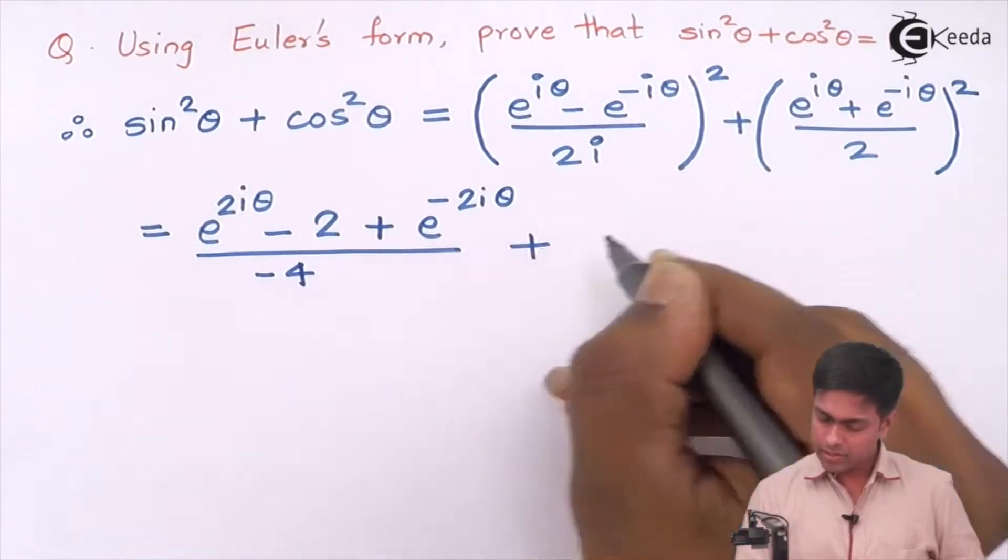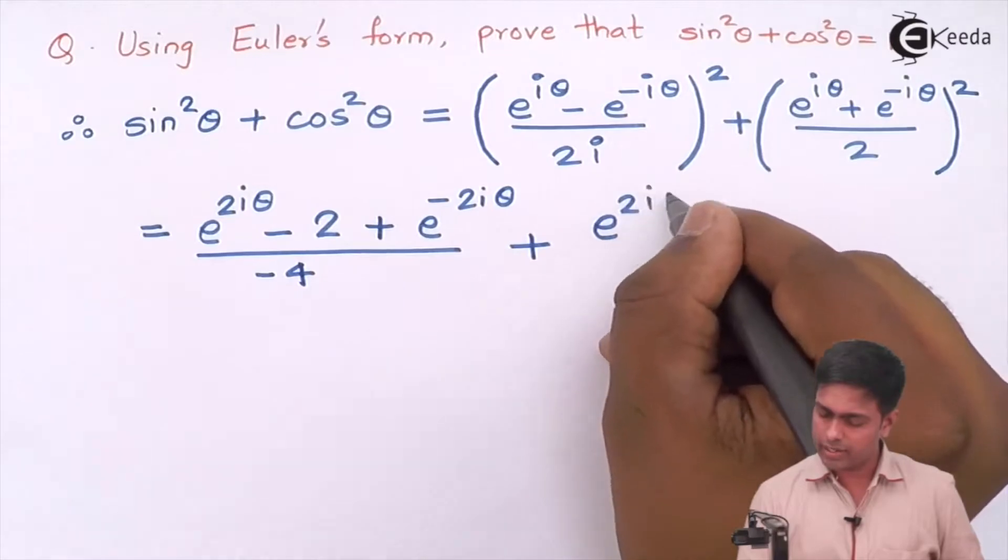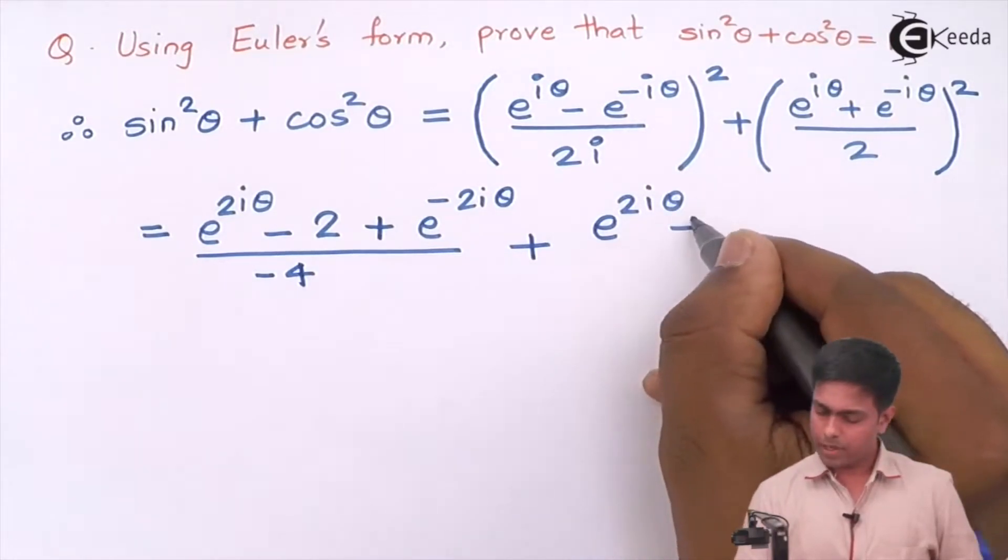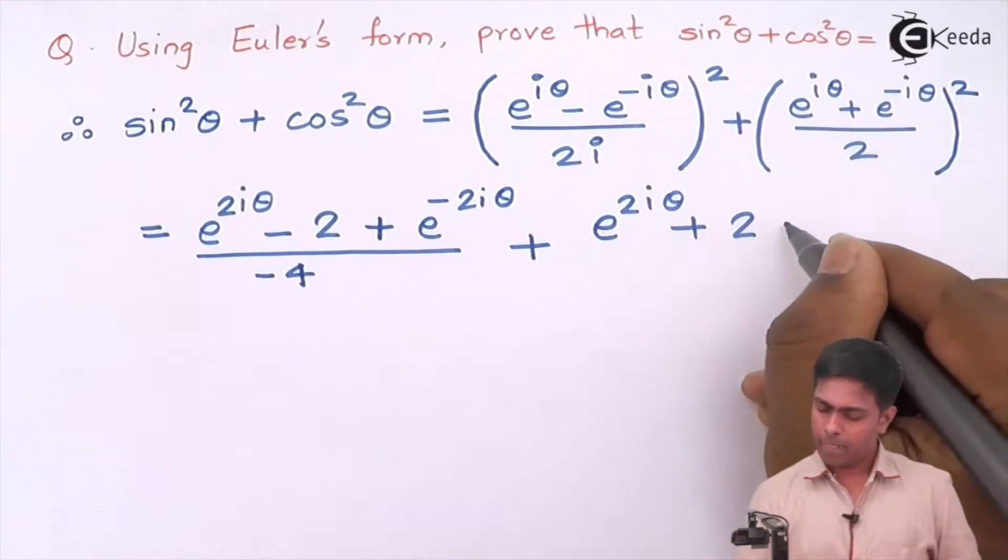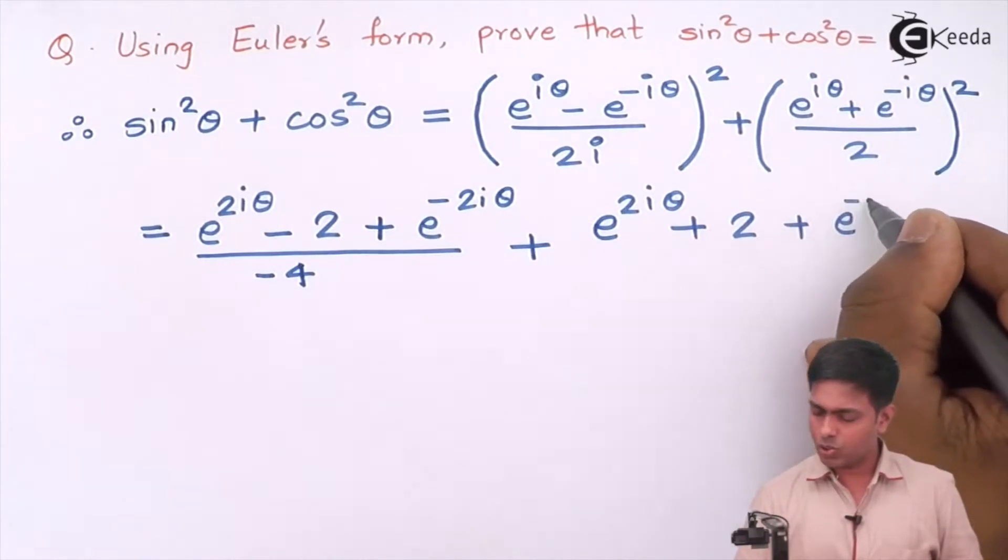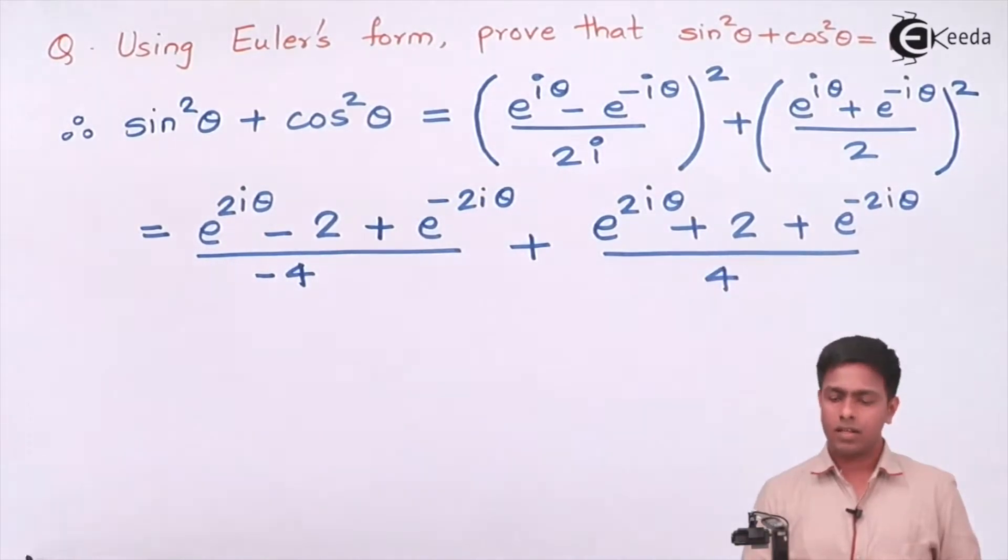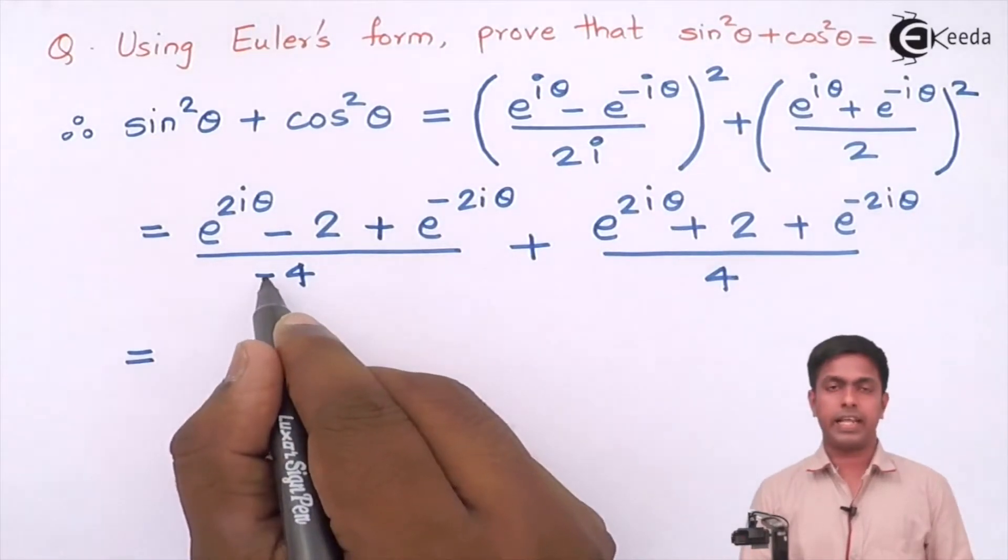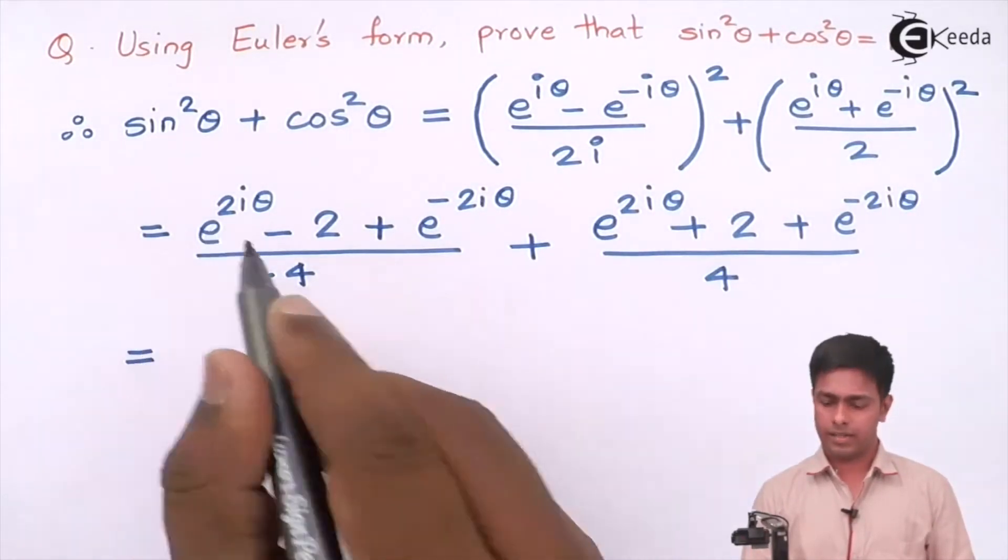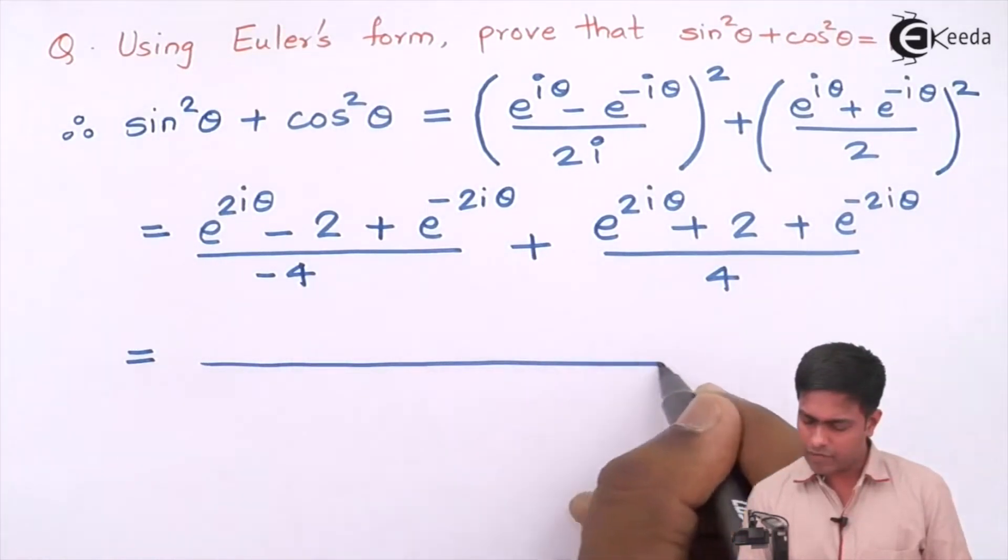Plus here again the same formula, so e raised to 2i theta plus 2 into a into b, so multiplication of this is 1, plus e raised to minus 2i theta upon 4. Now if I shift this negative sign in the numerator then denominator is same.